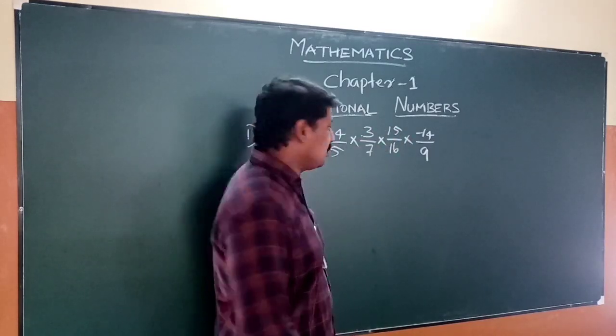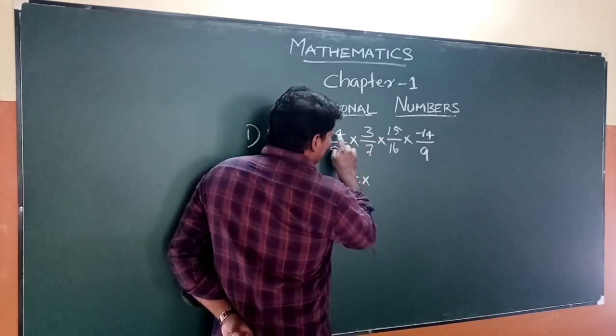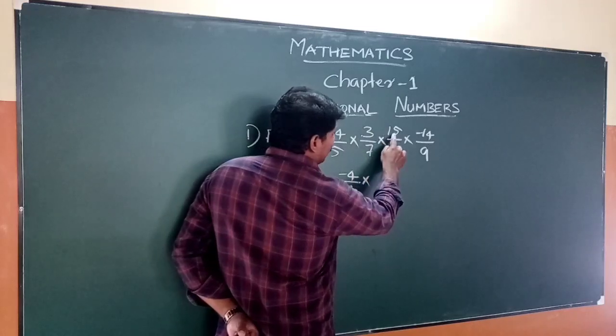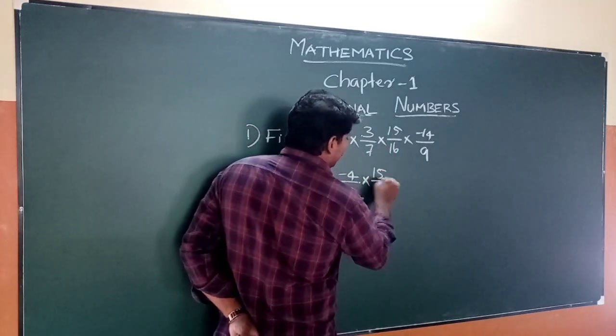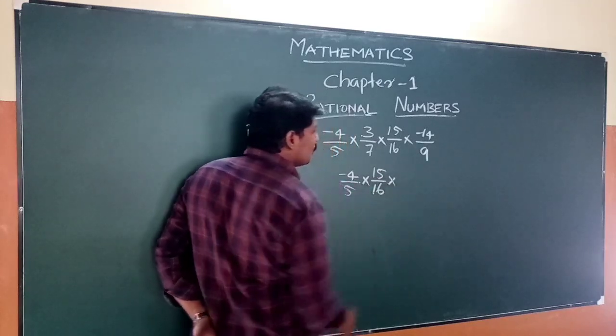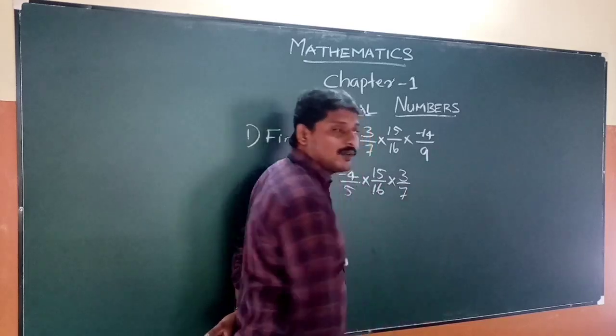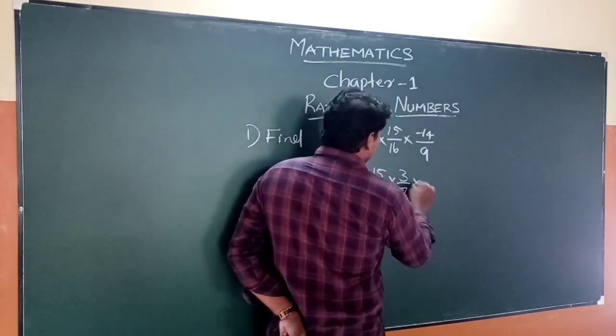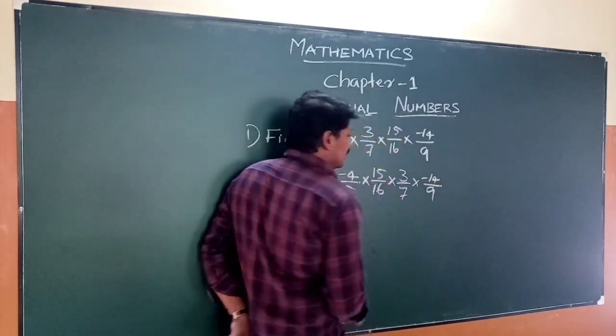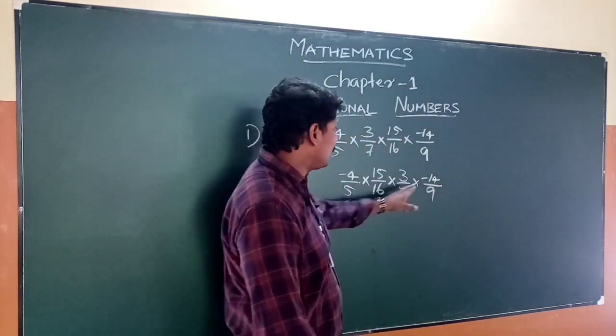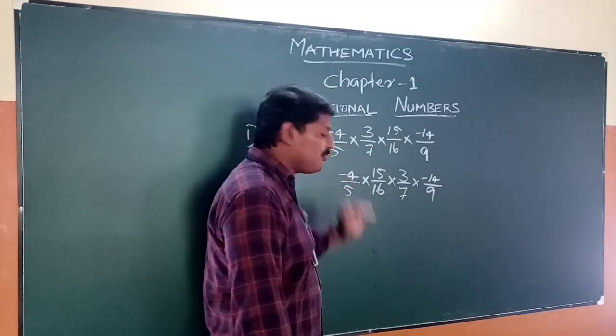Now we rearrange it: (-4/5) × (15/16) × (3/7) × (-14/9). Notice that 7 divides 14, and 3 divides 9. This is how we set it up for simplification.